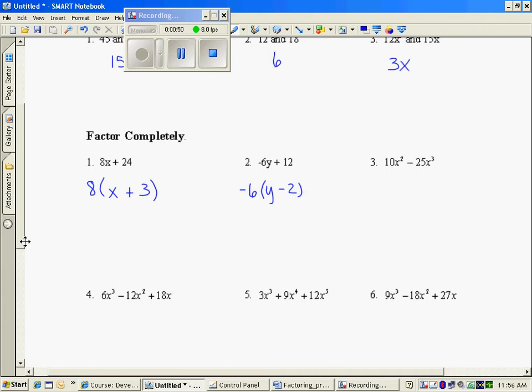Between 10 and 25 would be a 5, and they both at least have two x's in common. So 5x squared times 2 is 10x squared. 5x squared times 5x would be 25x cubed.